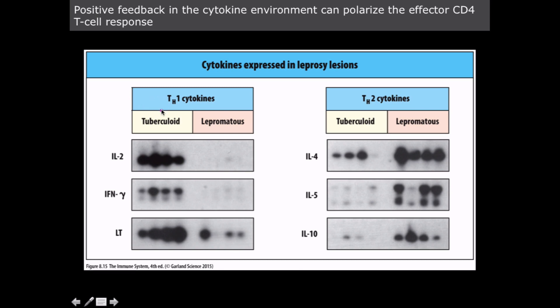The Th1 cytokine interferon gamma and the Th2 cytokine interleukin-4 play roles both in effector function and in inducing further differentiation to Th1 or Th2 respectively. This creates a positive feedback loop — otherwise known as a polarization event — resulting in rapid expansion of either Th1 or Th2 helper T cells involved in the response.